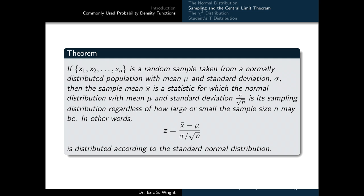There's a related theorem worth knowing that ties random sampling back to the standard normal distribution. If x1 through xn is a random sample taken from a normally distributed population with mean mu and standard deviation sigma, then the sample mean x-bar has a normal sampling distribution with mean mu and standard deviation equal to the standard error — exactly, not approximately, regardless of sample size. In other words, z equals the sample mean minus the theoretical mean, all divided by the standard error, is distributed according to the standard normal distribution.